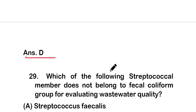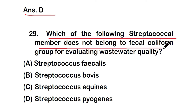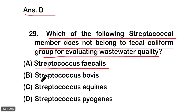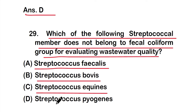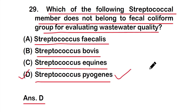Question number 29: Which of the following streptococcal members does not belong to the fecal coliform group for evaluating wastewater quality? Options: A) Streptococcus faecalis, B) Streptococcus bovis, C) Streptococcus equinus, or D) Streptococcus pyogenes. The right answer is option D — Streptococcus pyogenes does not belong to the fecal coliform group for evaluating wastewater quality.